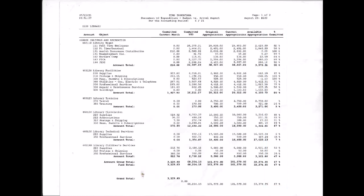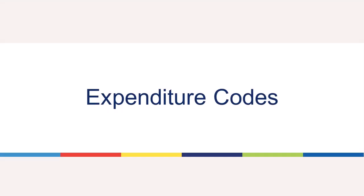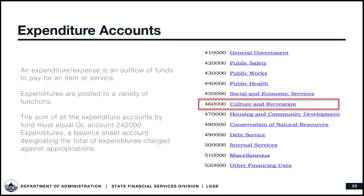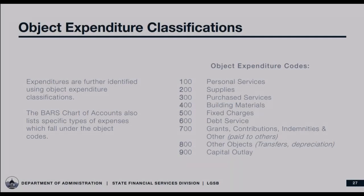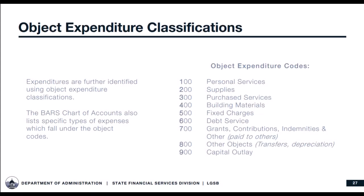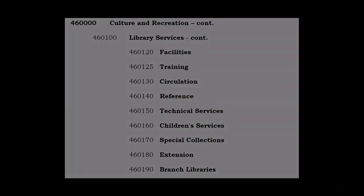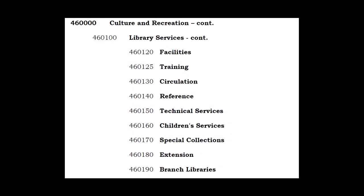Let's get a little bit more specific with library-related expense funds, accounts, and object codes. Library expenses are coded in the local government budget in 460-000, Culture and Recreation. Expenditure codes for this fund include library services in 460-100. Note that there are additional levels of expenditure codes for specific types of expenses.